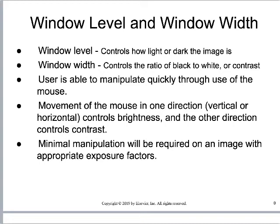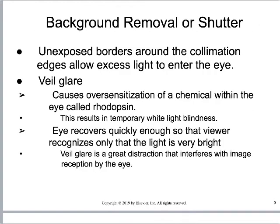Window level and window width — now on page 32 in the textbook. Window level controls how light or how dark the image is — the amount of whites or blacks on the image. Window width controls the amount of grays — the ratio of black to white, or the contrast. Window level equals brightness; window width equals contrast. You can manipulate that by moving your mouse over the picture. If you've taken a good picture on the appropriate histogram with the right lookup table and centered appropriately, you should not have to do this — leave it up to the radiologist.